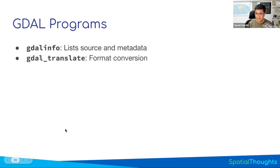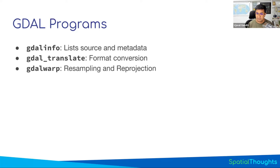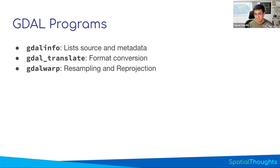GDAL Translate is the bread and butter of raster data processing. It takes any raster dataset supported by GDAL, applies some transformations, and writes a new dataset — so any format conversions or subsetting, you'll use GDAL Translate. GDAL Warp is the reprojection utility. If you want to change the projection, reproject, clip, or resample the data, you would use GDAL Warp. If you're changing the pixel grid or projection, use GDAL Warp. If you're retaining the same projection and pixel grid and just subsetting or changing data format, use GDAL Translate.